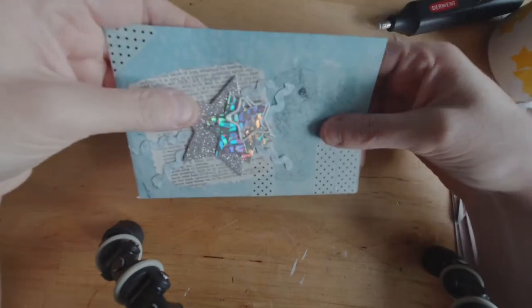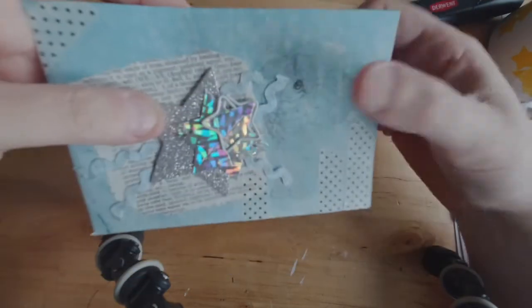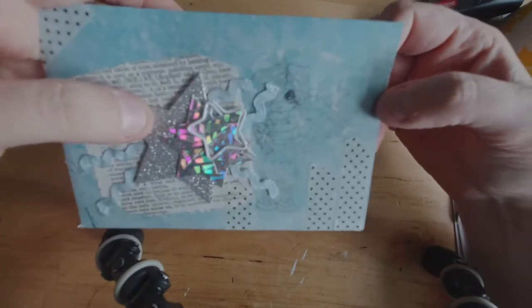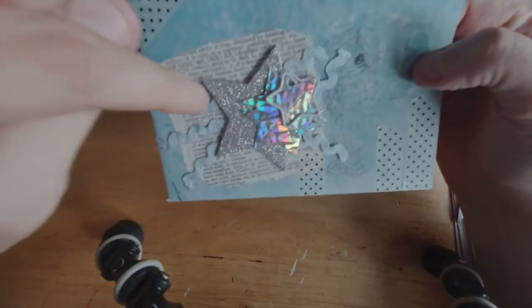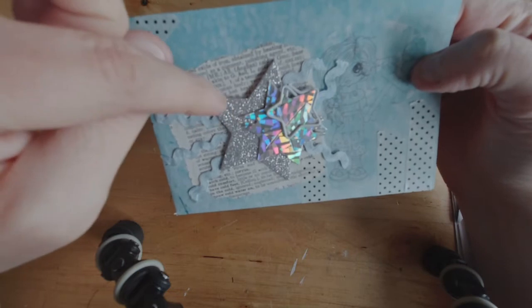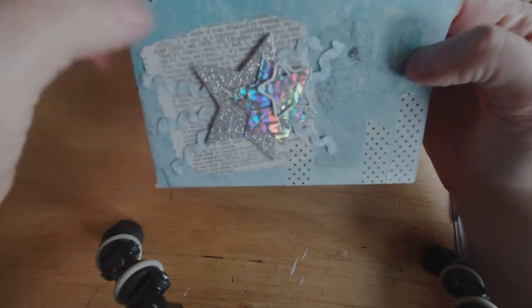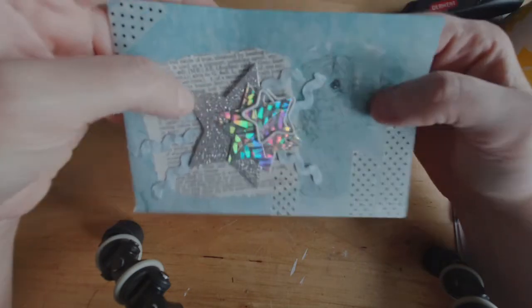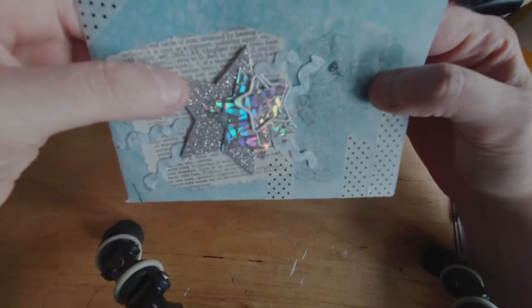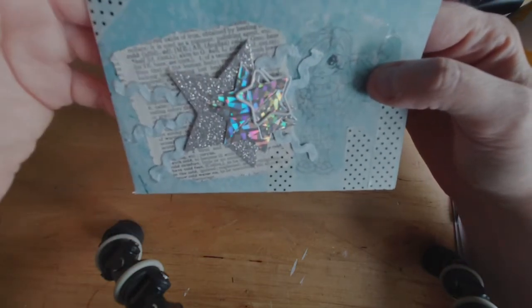The link to the Digi will be in the description box. The chipboard stars, I got in a pack at Joann's in their Park Lane 249 scrapbooking stuff. If I can find that online, I will put that up there for you also.